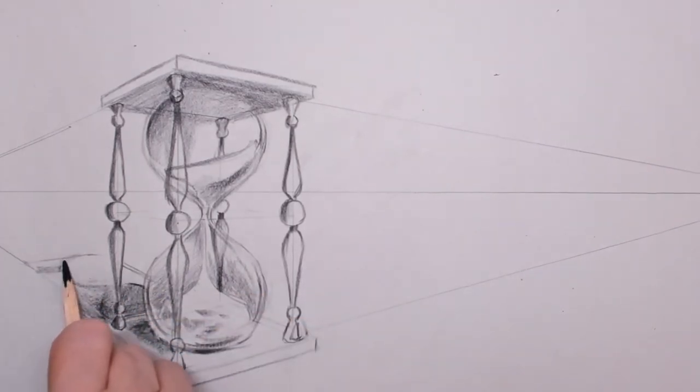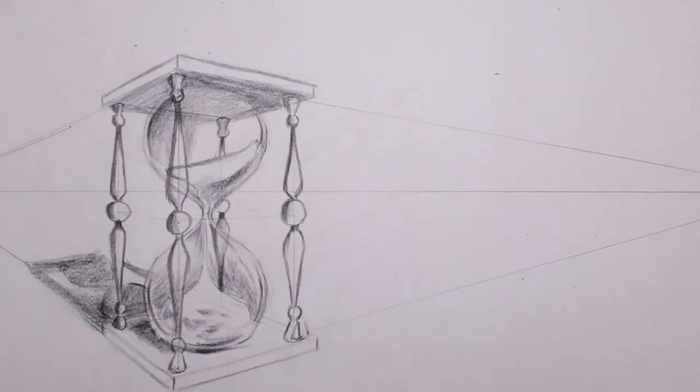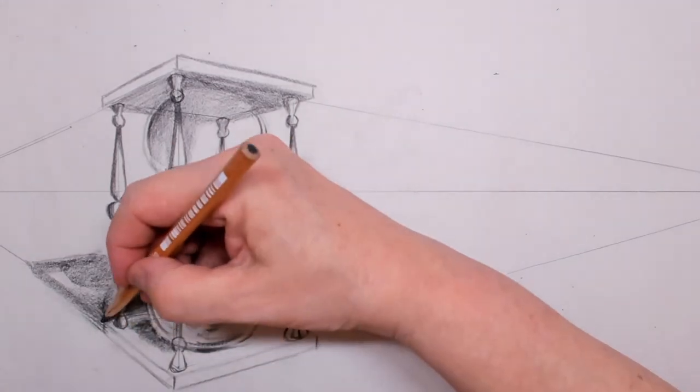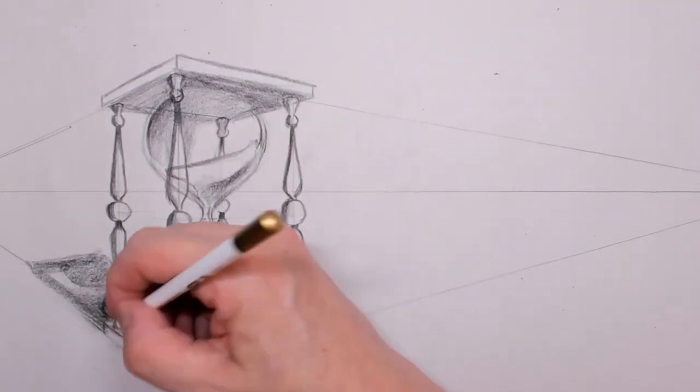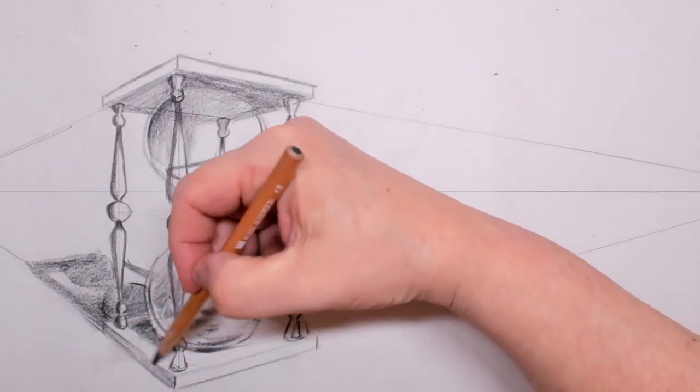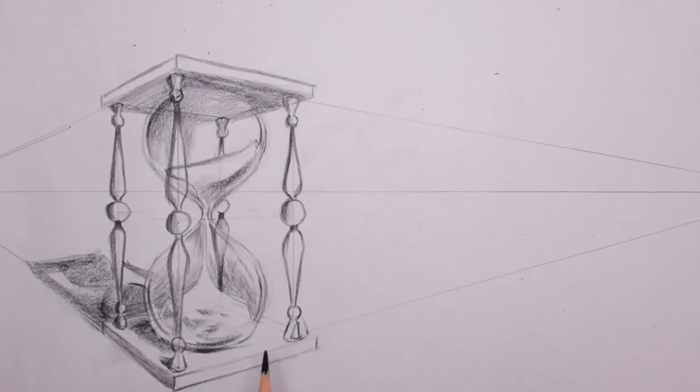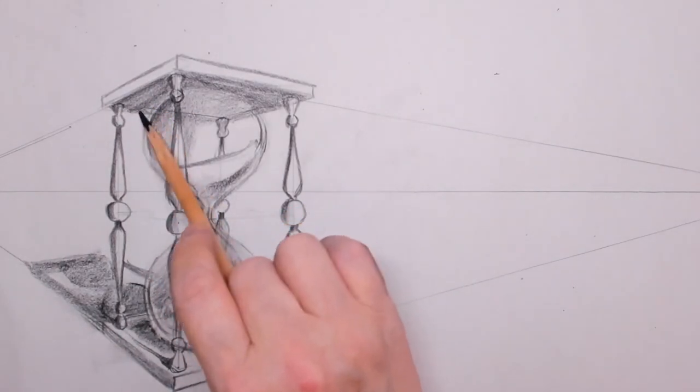I'm using a Wolf's carbon 6B compressed charcoal. You can put in a lot of contrast with those pencils. Because this is an imaginary drawing, it's very hard sometimes to figure out how the shadows will exactly go, so I simply put in the shadows by feel.